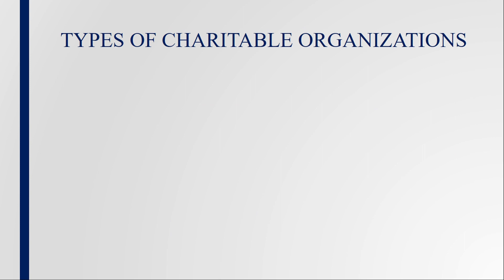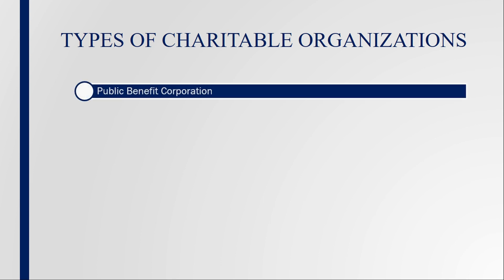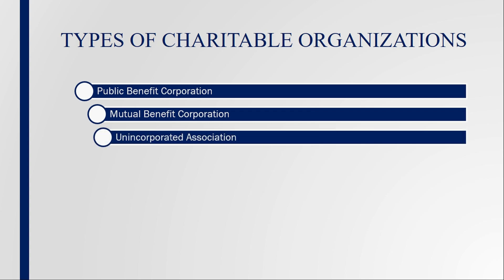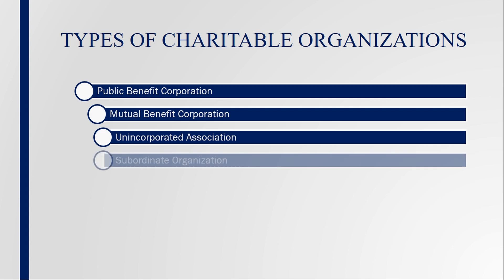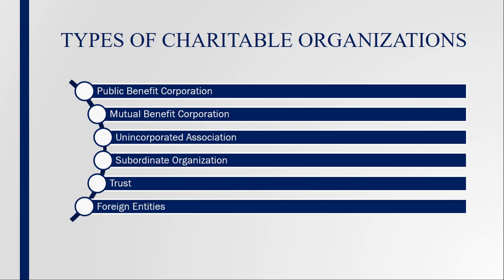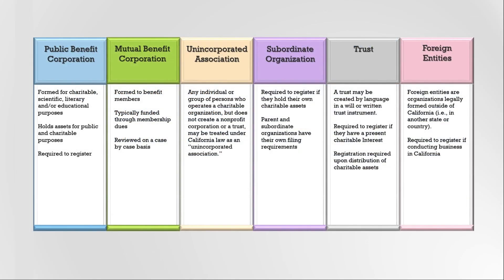The following are the primary types of charitable organizations that may need to register with the Registry: Public Benefit Corporations, Mutual Benefit Corporations Holding Charitable Assets, Unincorporated Charitable Associations, Subordinate Organizations, Charitable Trusts, and Foreign Charitable Entities. We will discuss the various types of non-profit organizations that must register and report to the Registry.